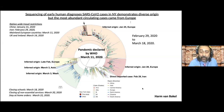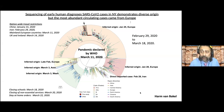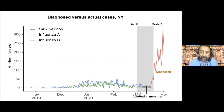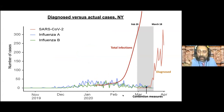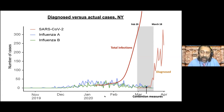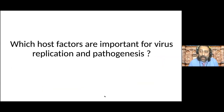By the time travel restrictions were closed to China, there was already phylogenetic evidence that the virus was circulating in New York since approximately January 25 — not arriving directly from China but through Europe. The WHO declared a pandemic on March 11, by which point the virus was already well-spread but undetected due to insufficient diagnostic testing. By the time containment measures like closing schools and non-essential services were implemented, there were already many infections circulating, making control much harder.